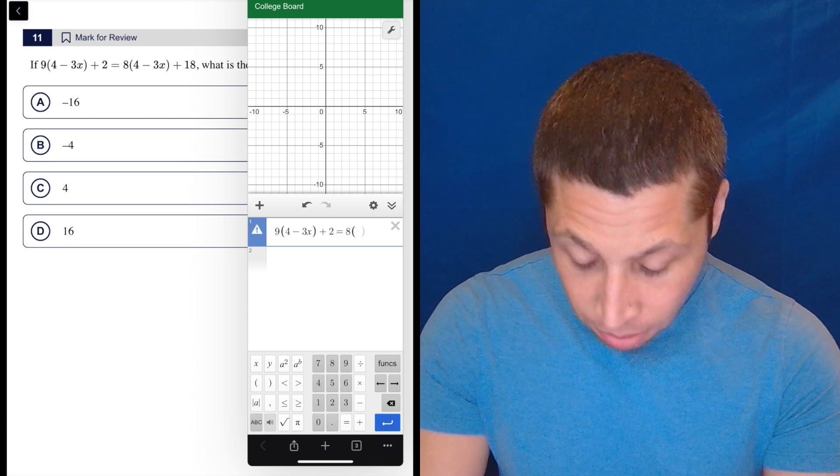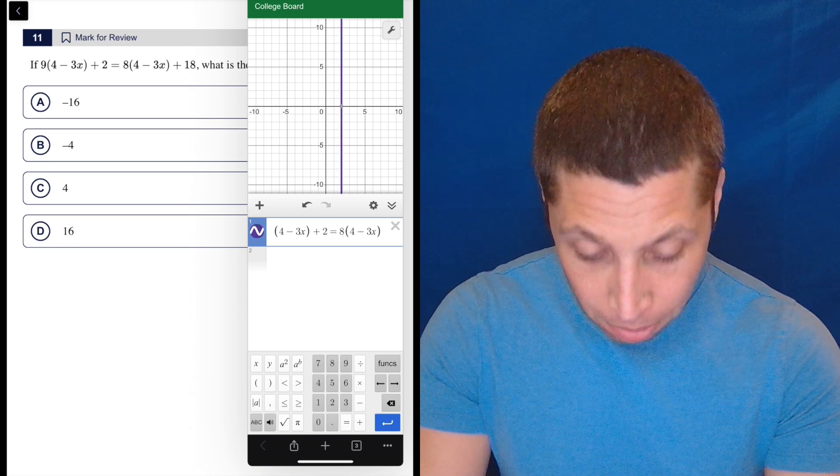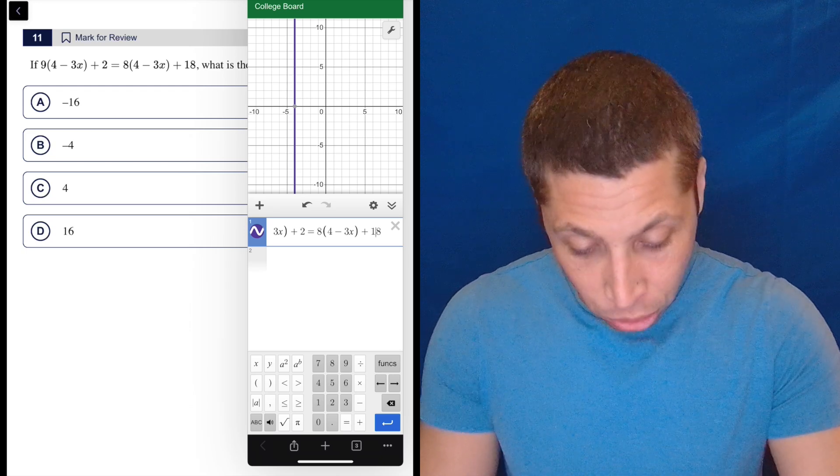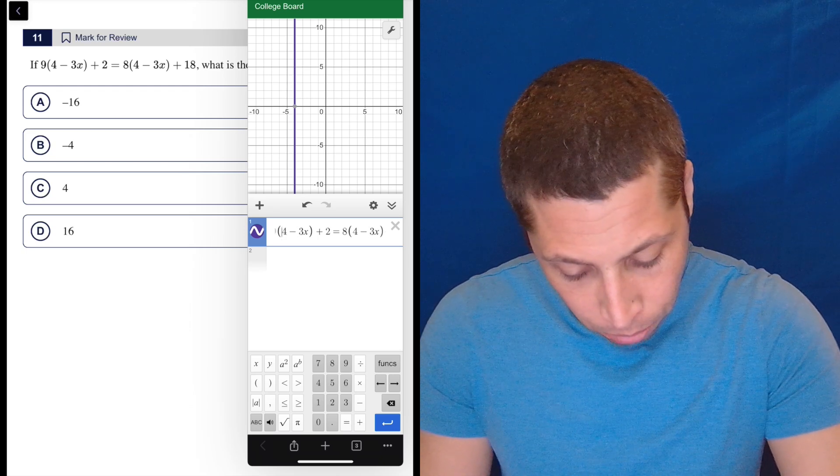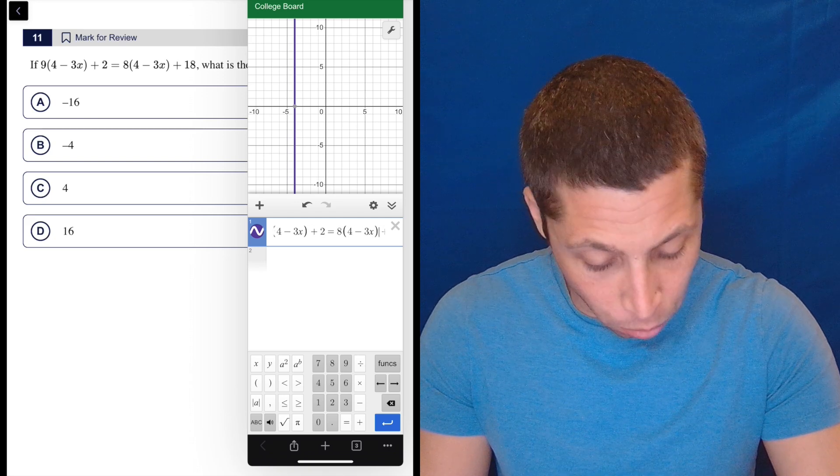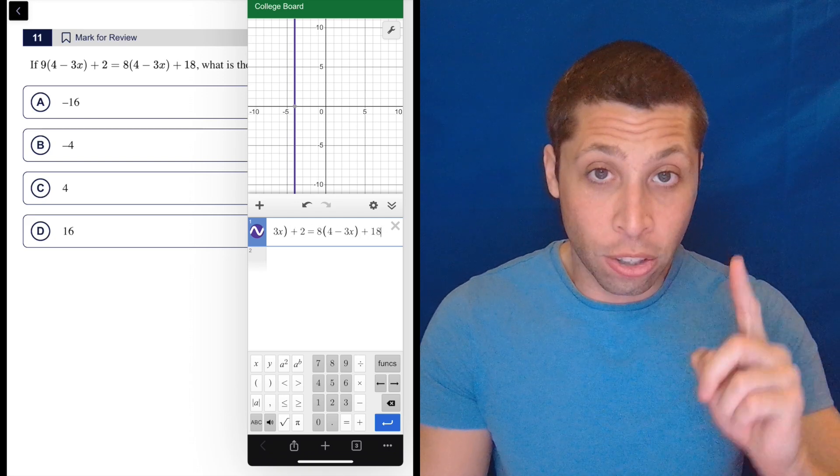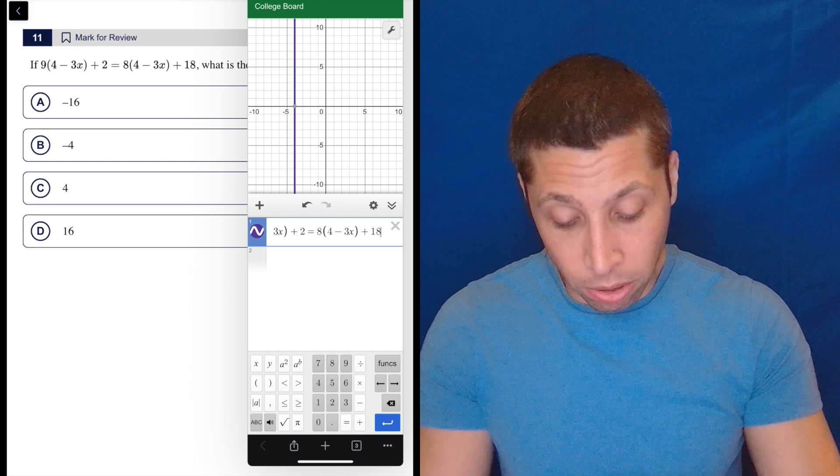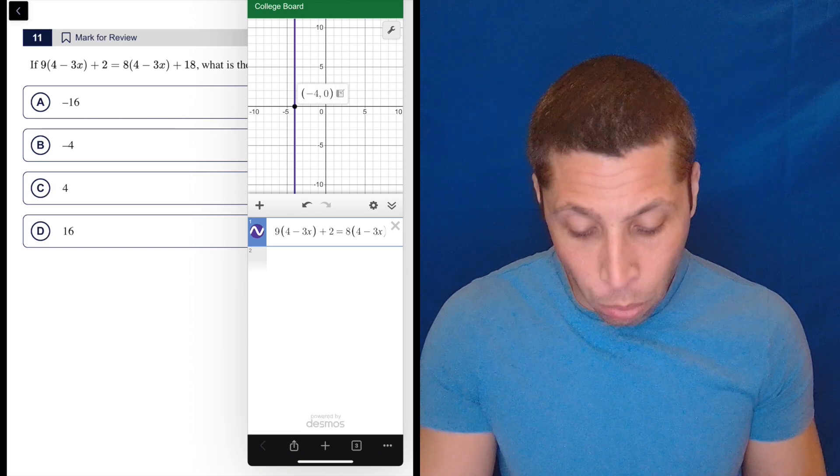Nine times four minus three X plus 18. And let's double check that it's right. So let's go all the way back to the front. Make sure you type it right. Nine times four minus three X plus two is equal to eight times four minus three X plus 18. Looks good. We're going to get a vertical line where the solution is because there's only one variable. It is at negative four.